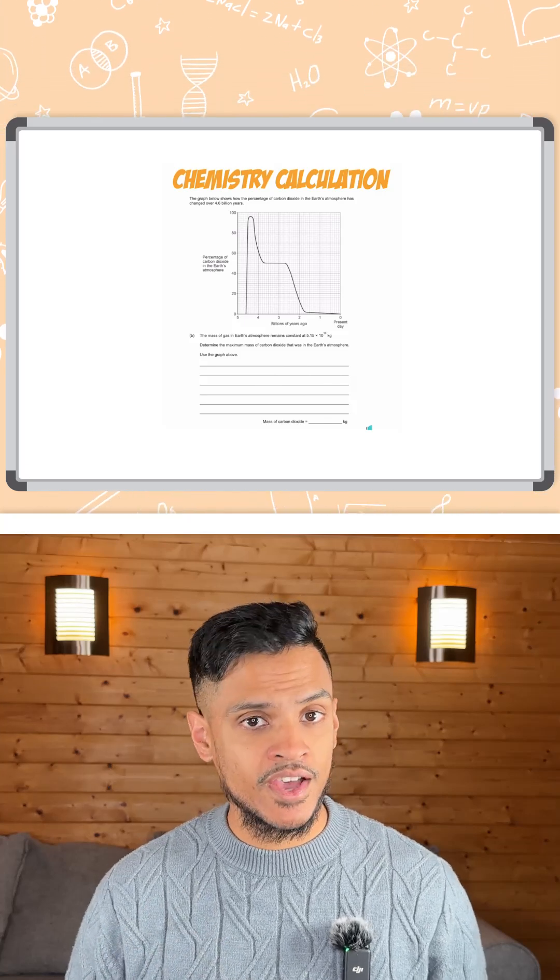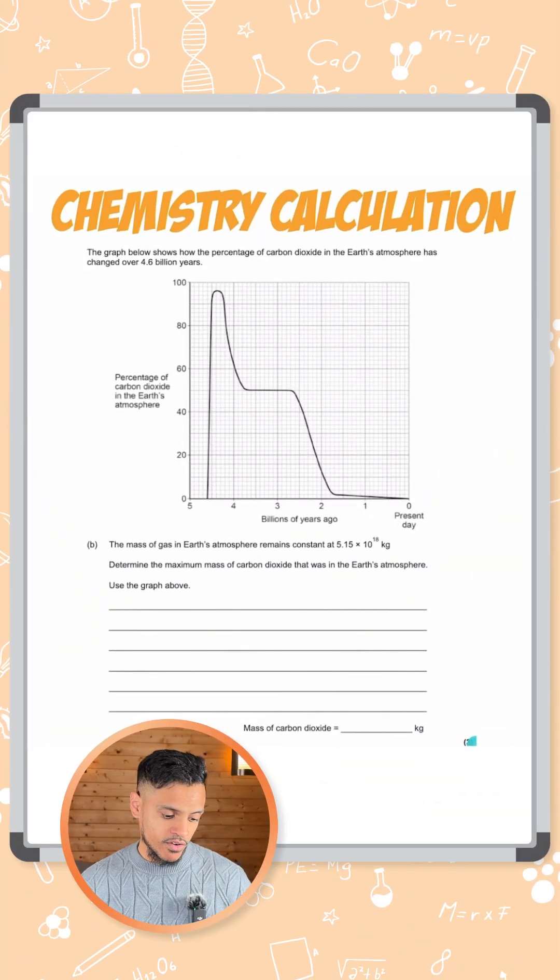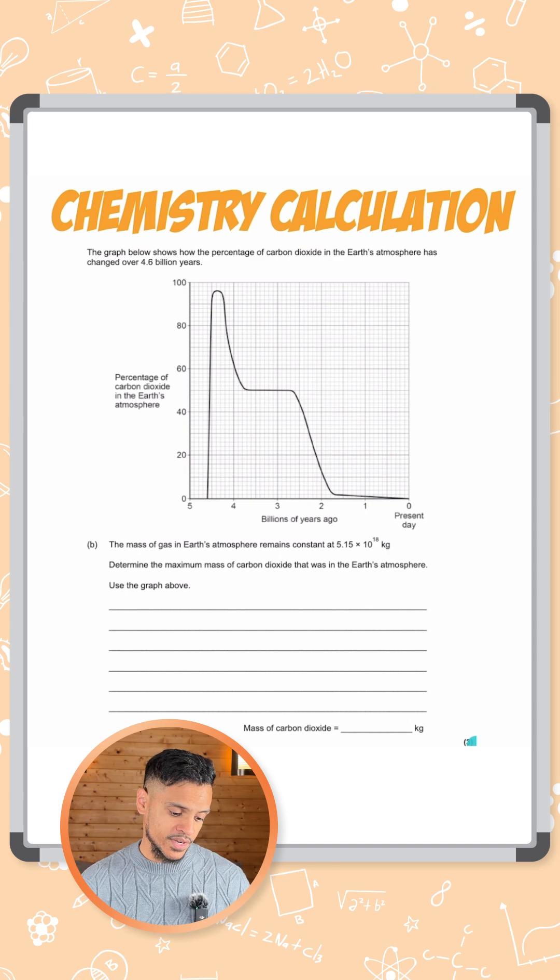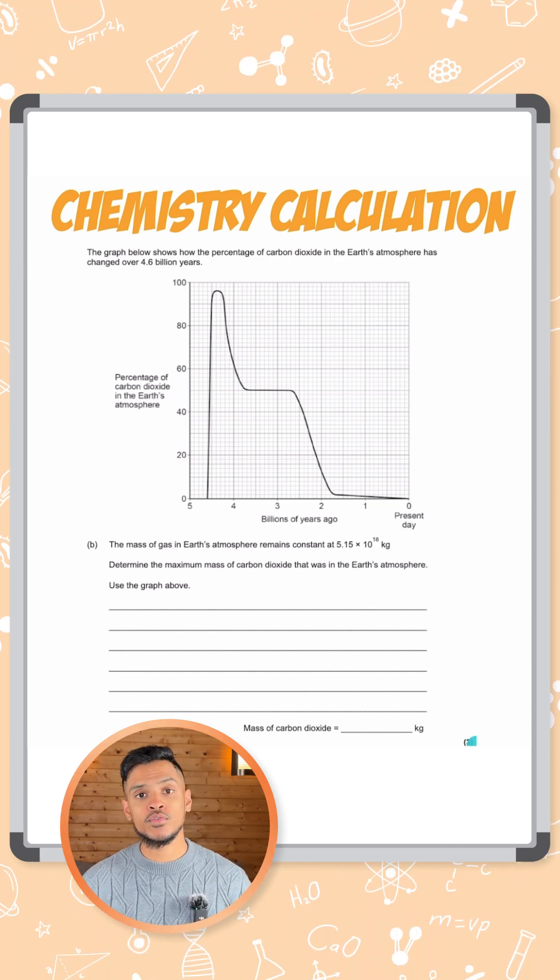Right, we have a calculation here on the Earth's early atmosphere. The graph below shows how the percentage of carbon dioxide in the Earth's atmosphere has changed over 4.6 billion years.